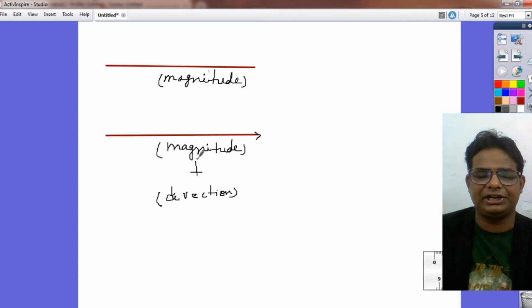So those physical quantities which have both magnitude and direction. That means a vector can be represented by an arrowed line.